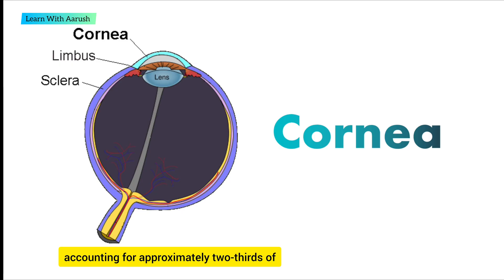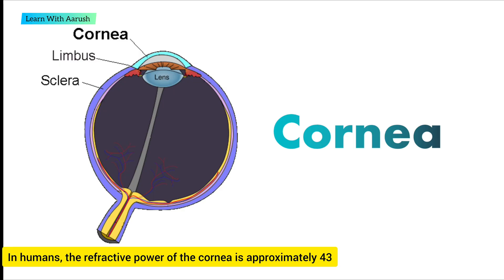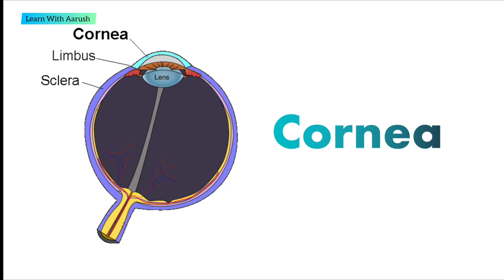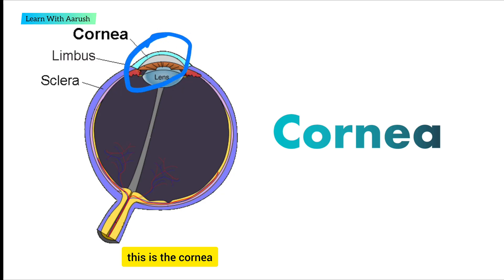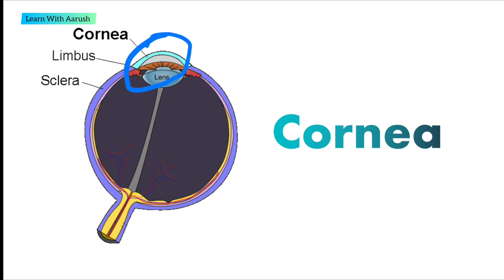accounting for approximately two-thirds of the eye's total optical power. In humans, the refractive power of the cornea is approximately 43 diopters. In this picture, you can see that this is the cornea, the front part of the eye that covers all the other parts.